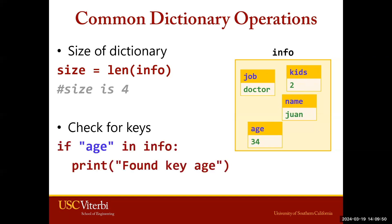You can also check if a key exists within a dictionary using branching and the reserved word in. For example, to check if age is a key within our info dictionary, we do: if age in info. If this evaluates as true, age is a key within our dictionary and it will print 'found key age'. This can be used to check if a key exists before accessing the dictionary, to avoid errors. However, this cannot be used to check if a value is in the dictionary — if you want to check for a value, you need to iterate with a for loop.